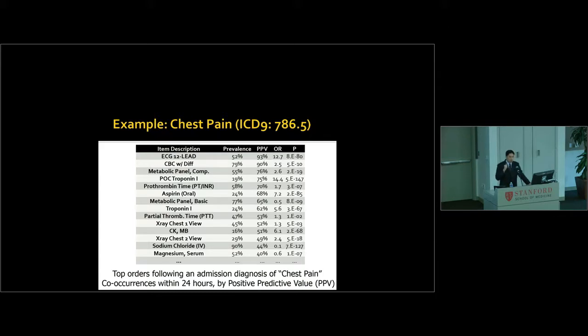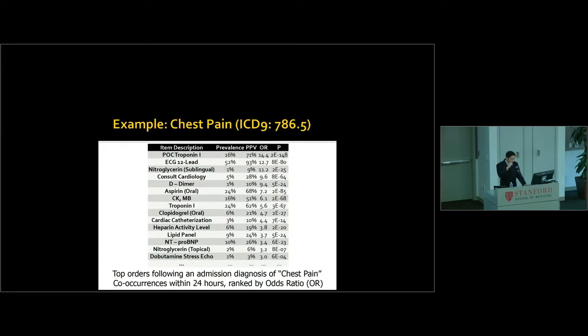Well, in any case, now here are the clinical orders that are most likely to occur within 24 hours of an admission diagnosis for chest pain. So things that make sense like you get an EKG because you're trying to assess for ischemia. And several stats you can derive from that include the baseline prevalence. So forget chest pain, just overall about 52% of patients in the hospital get an EKG. Positive predictive value is kind of your post-test probability. Given that you're admitted for chest pain, 93% of such patients get an EKG within 24 hours. That works out about 12 times the odds, tiny p-value.